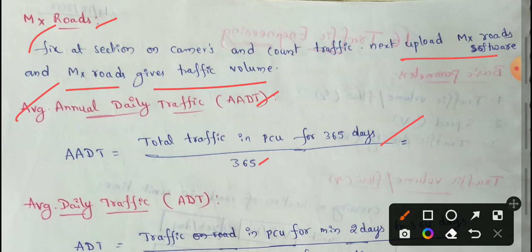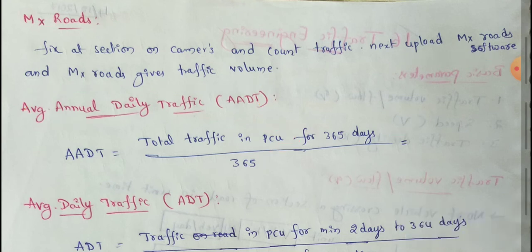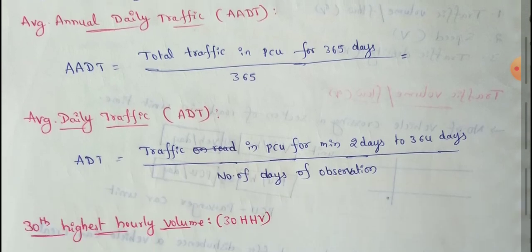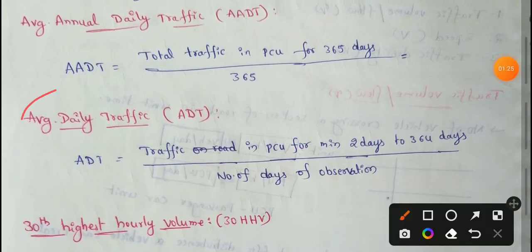So total traffic in PCU — passenger car unit — for 365 days divided by 365. This gives the average annual daily traffic volume at a given location. ADT is the average daily traffic volume at a given location for some period of time less than a year.